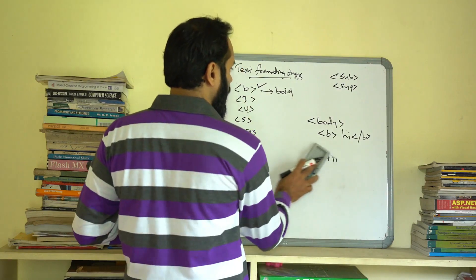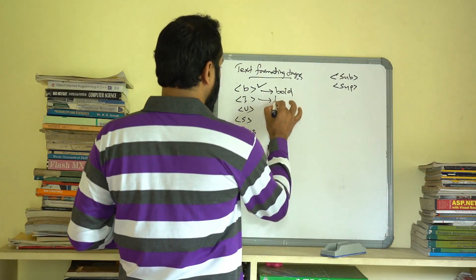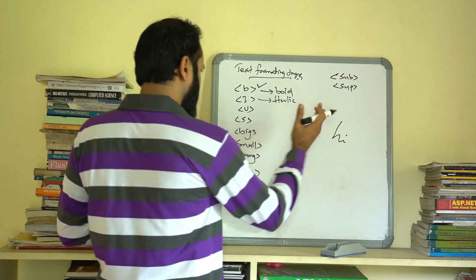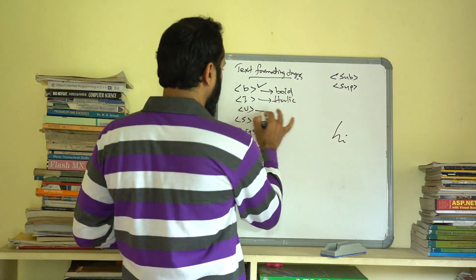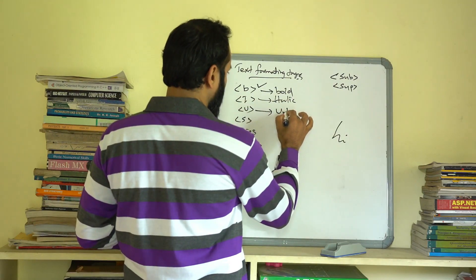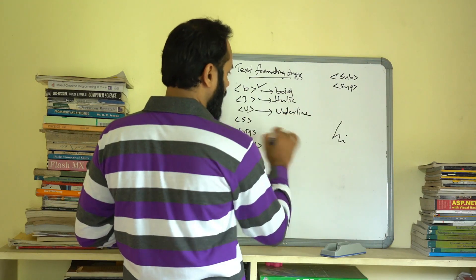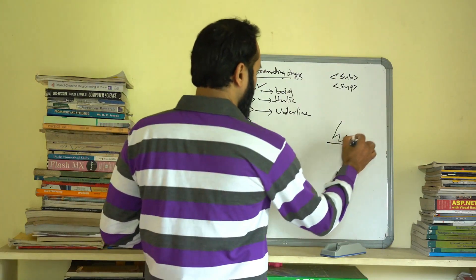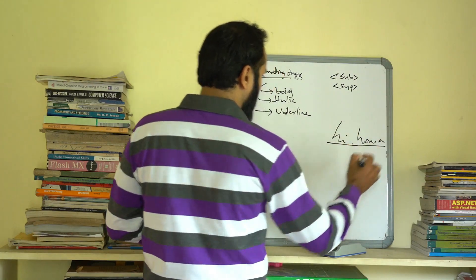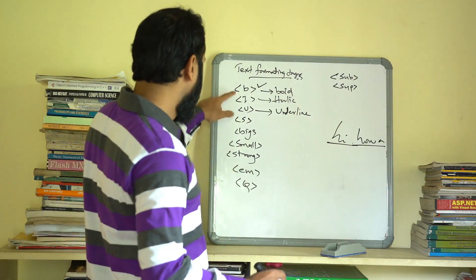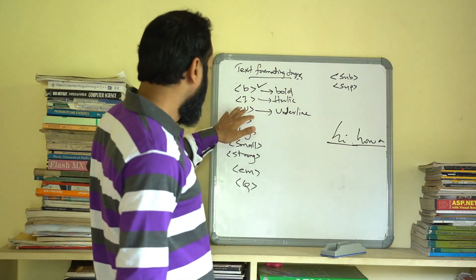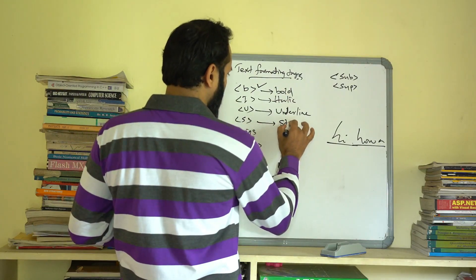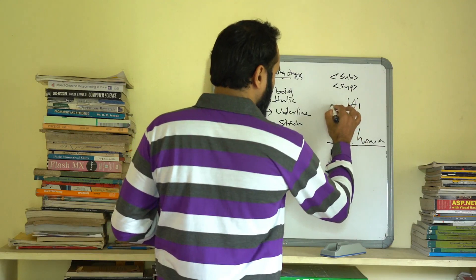I will use the bold tag. For italic, we use the I tag — the text will appear in italic style. For underline, we use the U tag. So: B is bold, I is italic, and U is underline. Then there is the S tag for strikethrough.